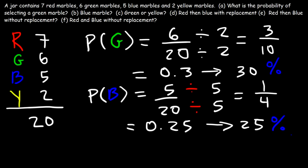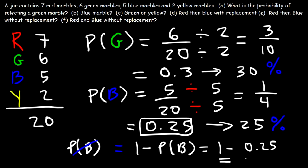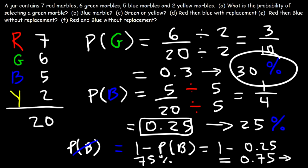Now if there's a 25% chance of selecting a blue marble, what is the probability of not selecting a blue marble? To find the probability of not selecting a blue marble, it's going to be 1 minus the probability of selecting a blue marble, which is 0.25. 1 minus 0.25 is equal to 0.75, which is 75%. So if there's a 25% chance of selecting a blue marble, then there's a 75% chance of not selecting a blue marble. If there's a 30% chance of selecting a green marble, then there's a 70% chance of not selecting a green marble.